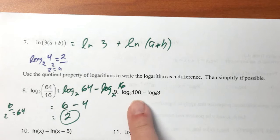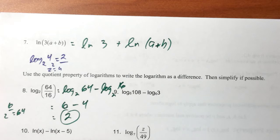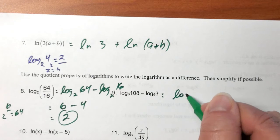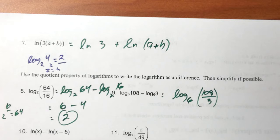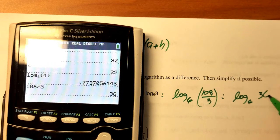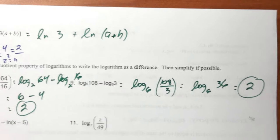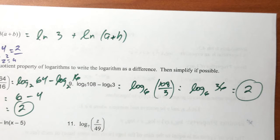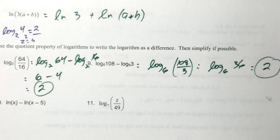Here we have two separate logs being subtracted: log base six of 108 minus log base six of 3. Log base six of 3 is an ugly decimal, but if we have separate logs being subtracted, we can work out 108 divided by 3 and have a single log. 108 divided by 3 is 36, so this is log base six of 36. Six squared is 36, so that works out to be two. I want you to get comfortable with the properties because sometimes there are variables involved.